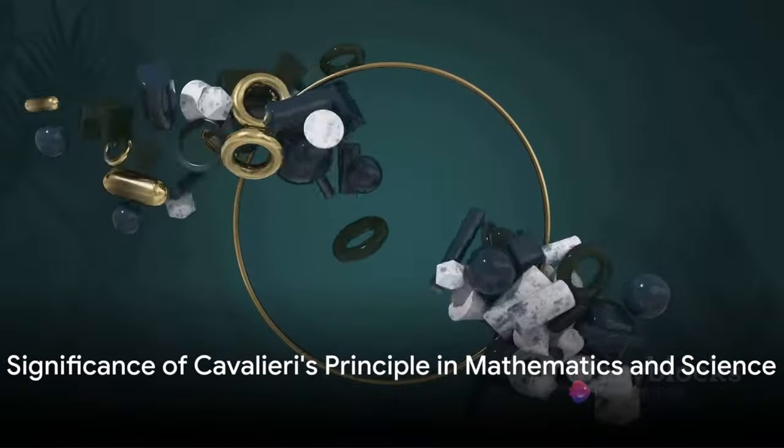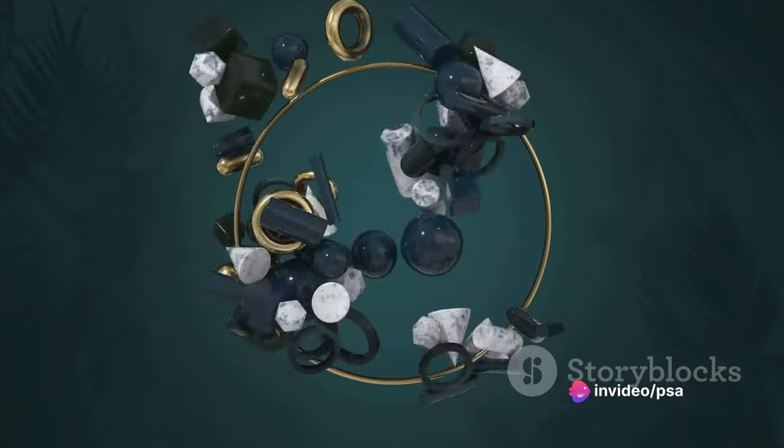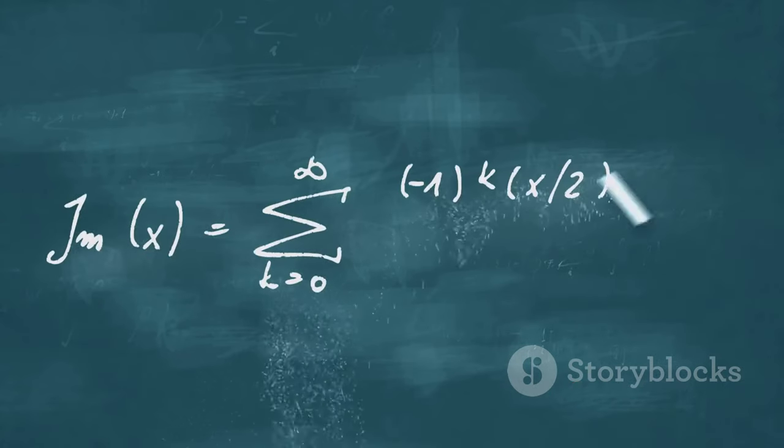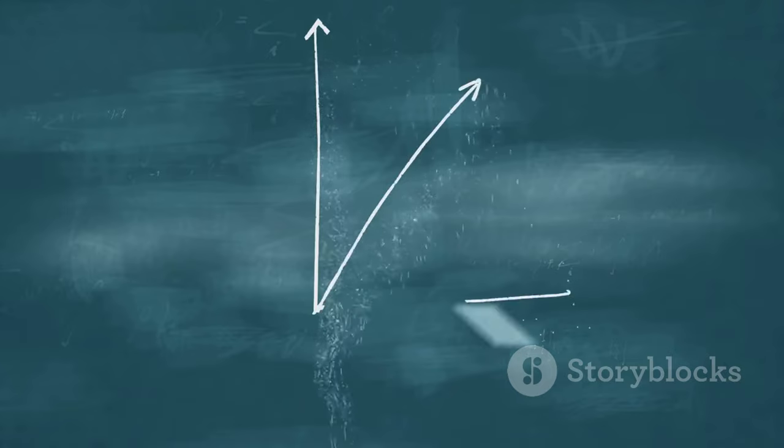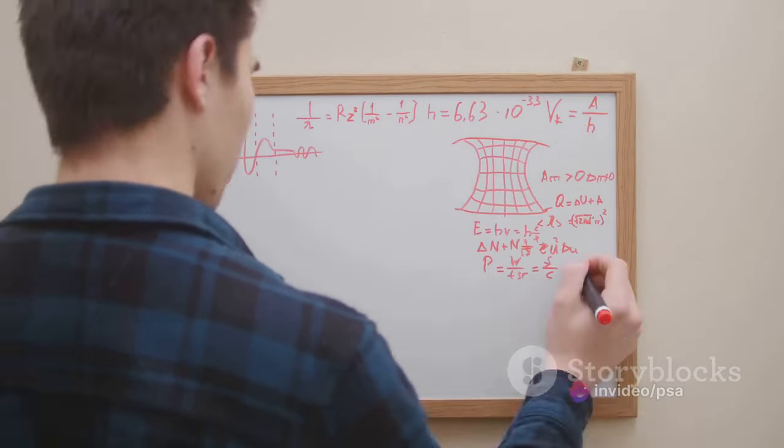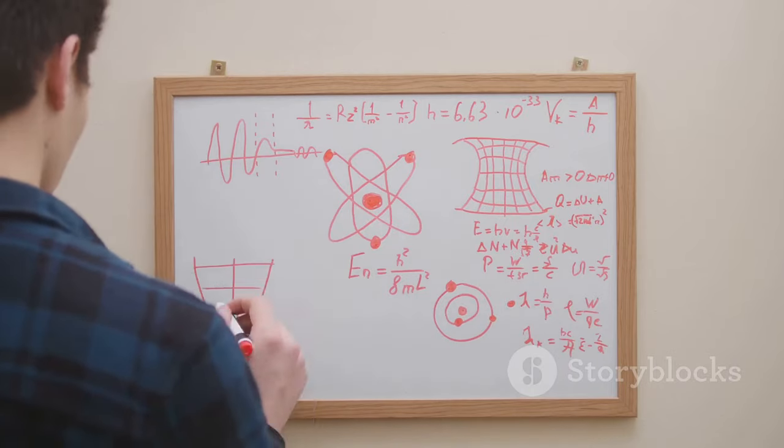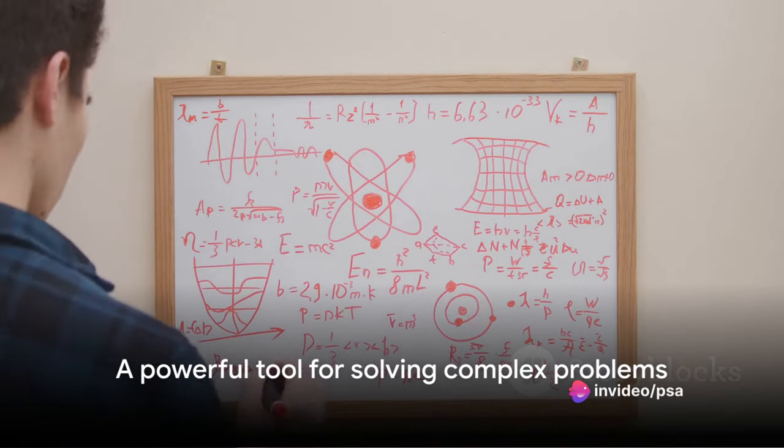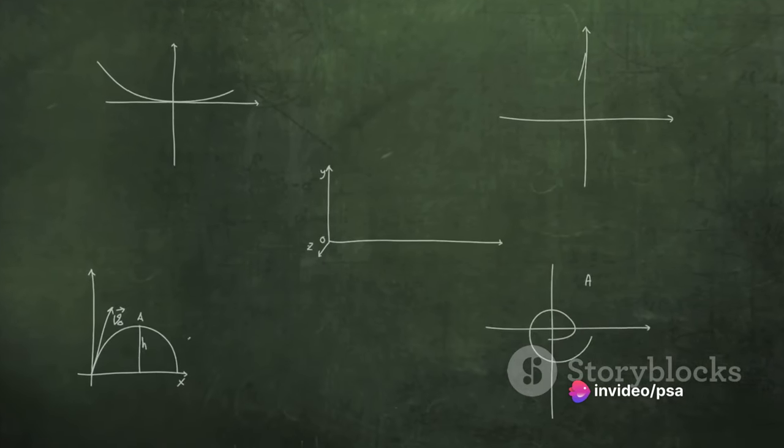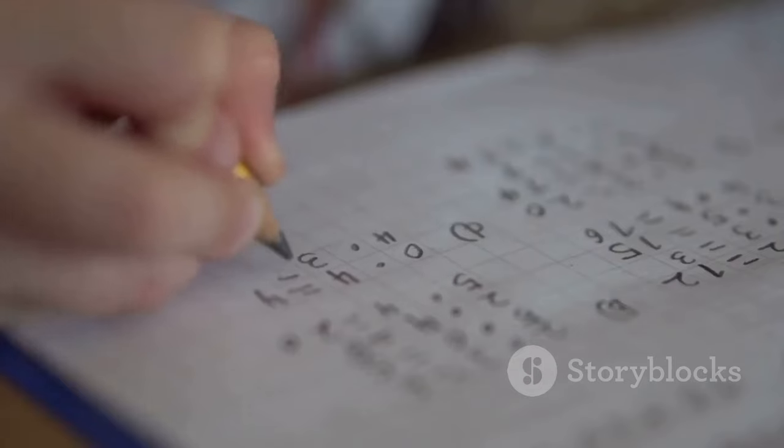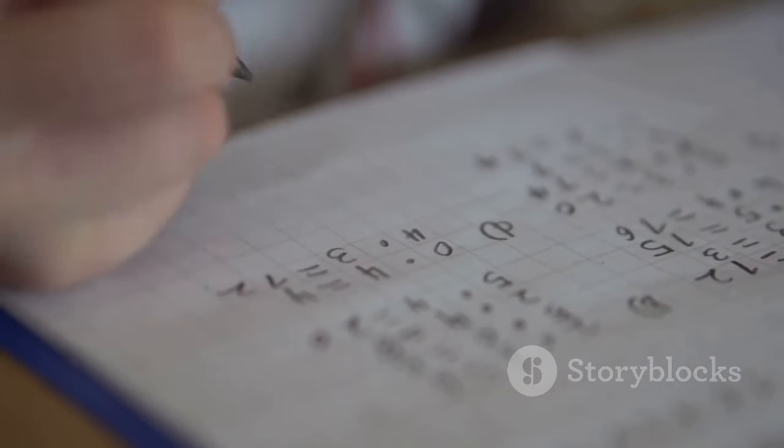Cavalieri's principle is more than just a neat mathematical trick. It's a fundamental concept in geometry. This principle, named after Italian mathematician Bonaventura Cavalieri, has far-reaching implications that go beyond the realm of pure mathematics. Let's delve into why Cavalieri's principle is so significant. It's essentially a method for comparing volumes of different shapes, allowing us to see that if two shapes have the same cross-sectional area at every height, then they also have the same volume. This is a powerful concept as it gives us a tool to solve complex problems that might otherwise seem impossible. But Cavalieri's principle isn't just a tool for solving problems in geometry, it's also an essential foundation for more advanced mathematical concepts, particularly in the field of calculus.